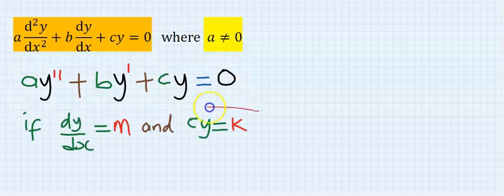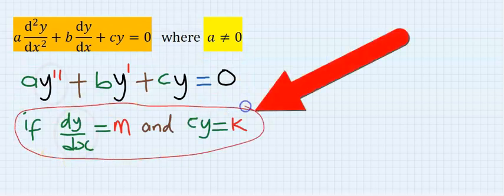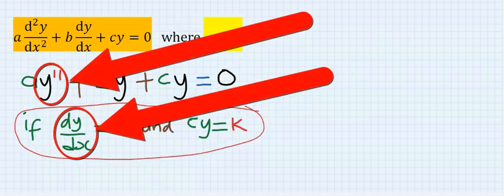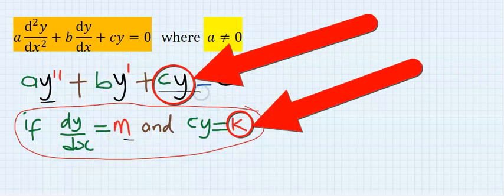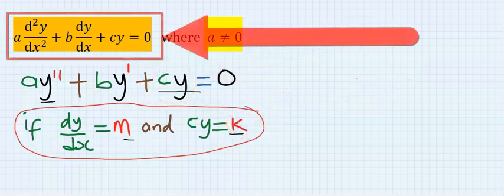Let's consider this. If dy/dx is, let's say, m, and cy is, let's say, k, this standard form becomes...